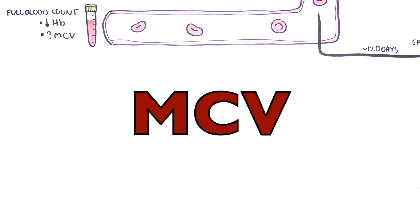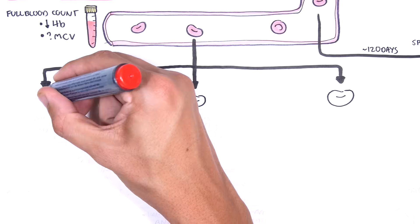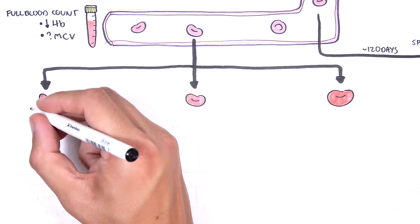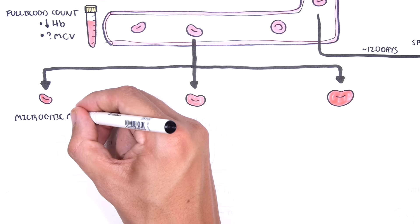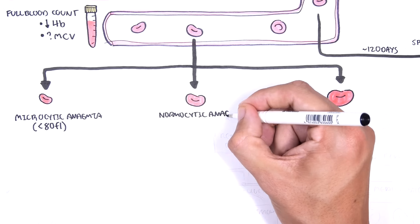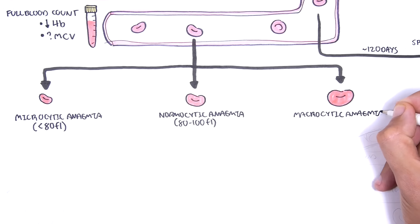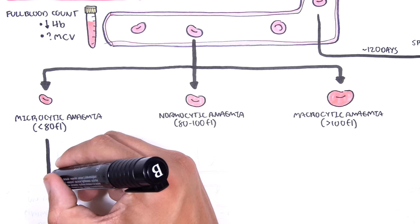The mean corpuscular volume, abbreviated MCV, is the average size of the person's red blood cell. Therefore, one way to categorize anemia is using the mean corpuscular volume. You can have microcytic anemia less than 80 femtoliters, normocytic anemia between 80 to 100 femtoliters, and macrocytic anemia which is greater than 100 femtoliters. These are essentially the sizes of the red blood cell.